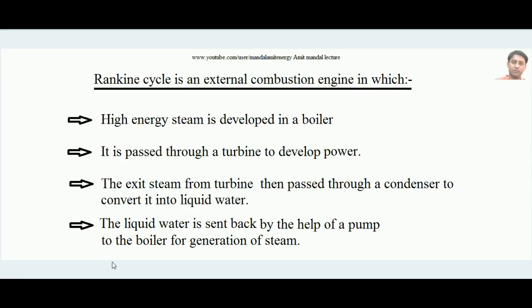The Rankine Cycle is an external combustion engine in which high energy steam is developed in a boiler. Water enters the boiler and by addition of heat it converts into high energy steam. That high energy steam is passed through a turbine to develop power, and the turbine transforms the energy content of steam into mechanical work. The exit steam from the turbine is then passed through a condenser to convert it back into liquid water.